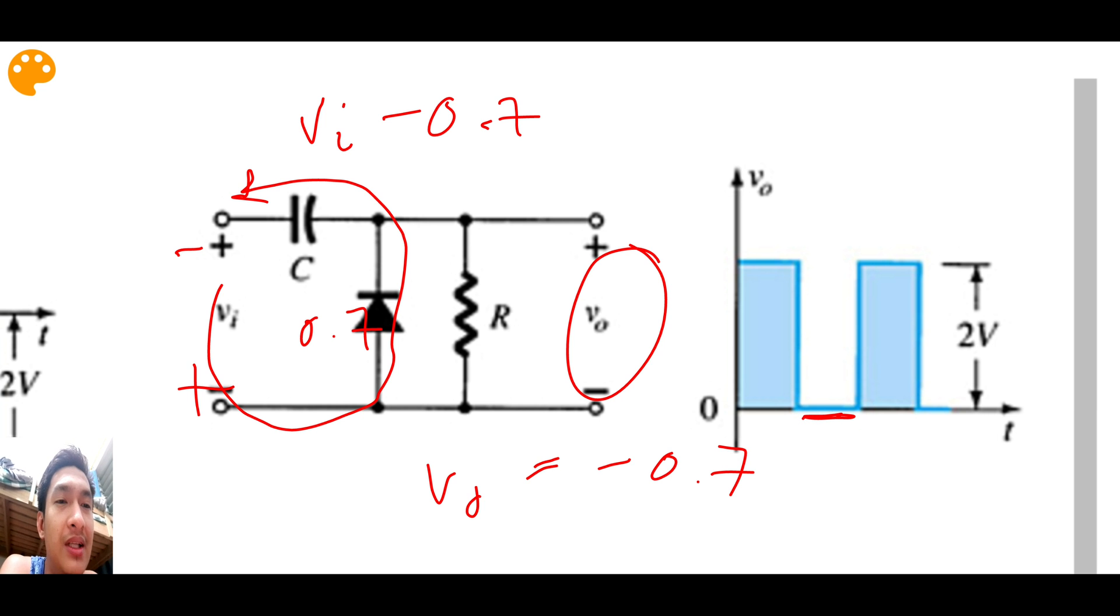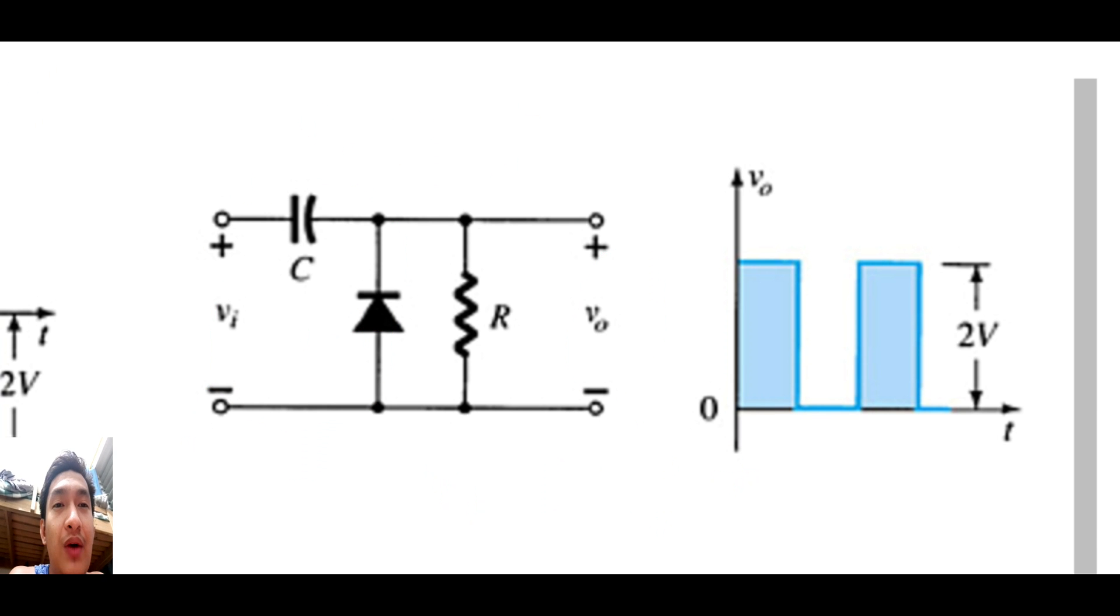So at the negative half cycle, at this part here, it's negative 0.7. However, in this example we're just assuming that the diode is an ideal diode, so that's why we have a zero flat here. However, if this is a silicon diode, we're going to expect that it's below zero by 0.7. So we have a VO of negative 0.7 during the negative half cycle.